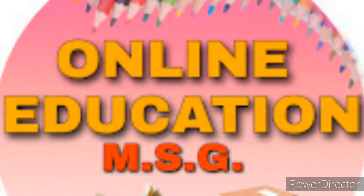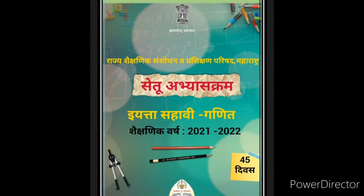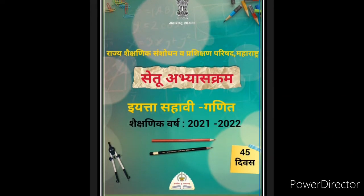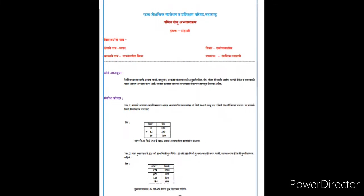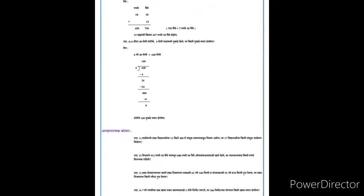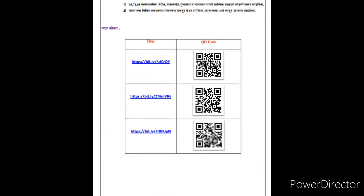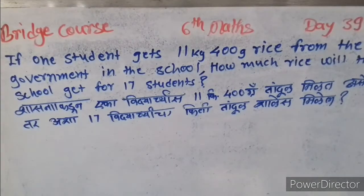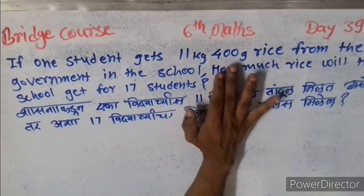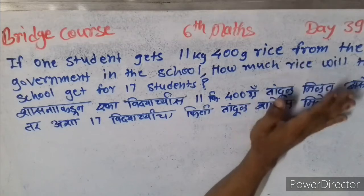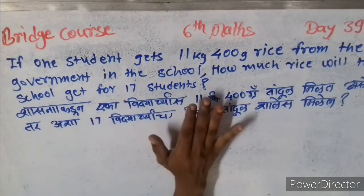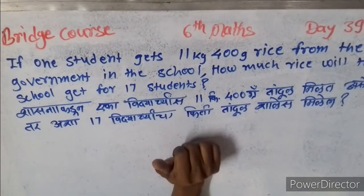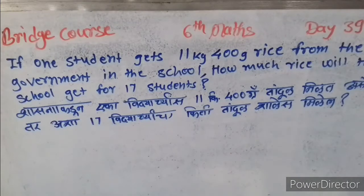Hello students, today is standard 6 mathematics bridge course day 39. We will learn about addition, subtraction, multiplication, and division. The first example: one student received 11 kilograms 400 grams of rice from the government school. How much rice will the school get for 17 students?